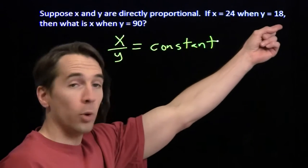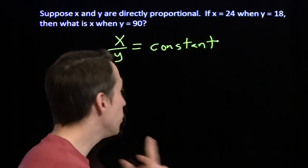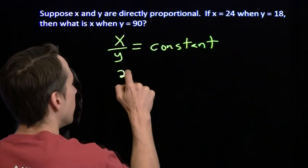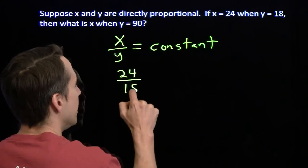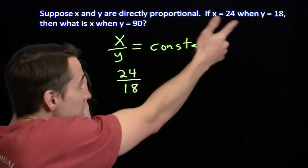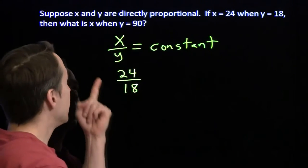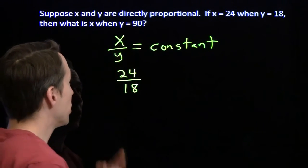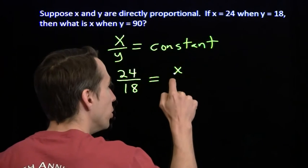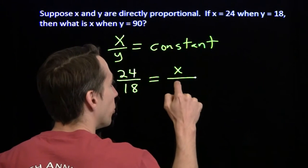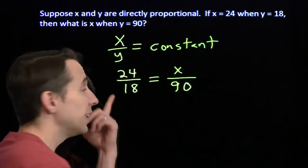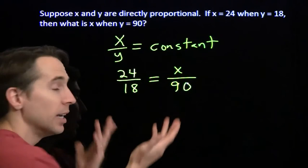So if x is 24 when y is 18, we know what that constant is — it's 24 over 18. So the ratio of x to y in this problem always has to be 24 to 18. Now if we change y to 90, well then we know our new x: the ratio of that to 90, x over 90, has to equal 24 over 18.